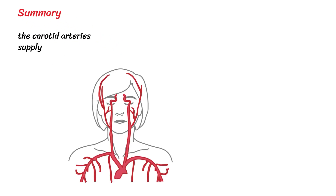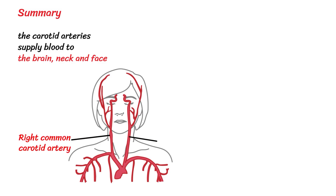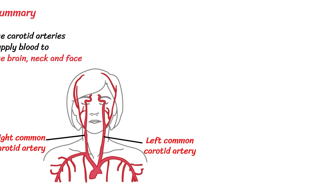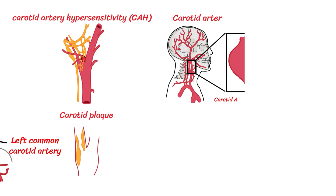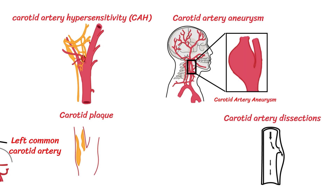In summary, this video covered the carotid arteries, which are major blood vessels supplying blood to the brain, neck, and face. There are two carotid arteries, one on each side of the body, and in the neck each common carotid artery branches into the external carotid artery — supplying the head and neck external to the cranium — and the internal carotid artery — supplying the brain, eyes, and forehead. We also discussed the clinical relevance of the carotid arteries, including carotid artery hypersensitivity, carotid plaques, carotid artery aneurysm, carotid artery dissections, and amaurosis fugax.